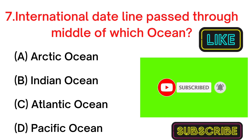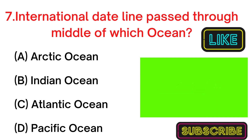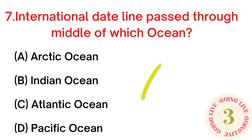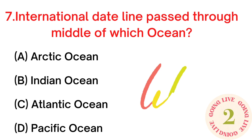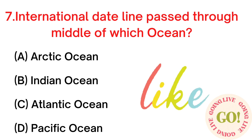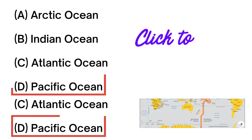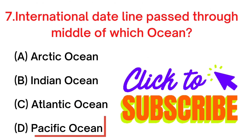Your next question: the International Date Line passes through the middle of which ocean? A. Arctic Ocean, B. Indian Ocean, C. Atlantic Ocean, D. Pacific Ocean. Your answer is D. Pacific Ocean. For more updates, subscribe to my channel GK Hindi and English.